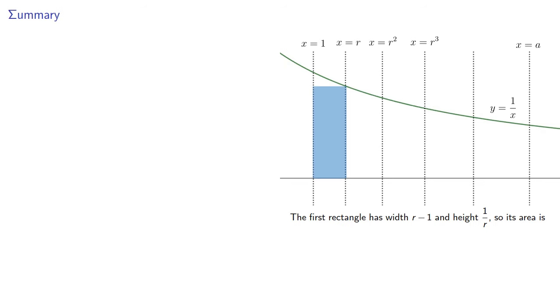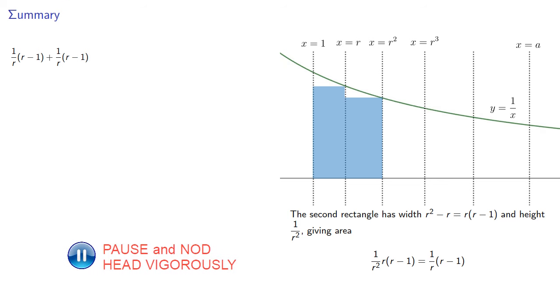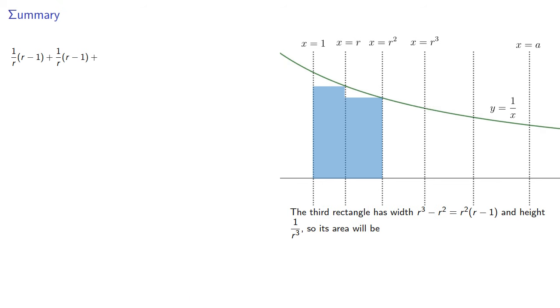The first rectangle has width r minus 1 and height 1 over r, so its area is r minus 1 over r. The second rectangle has width r squared minus r, which is r times r minus 1, and height 1 over r squared, giving area r minus 1 over r. The third rectangle has width r cubed minus r squared, which will factor as r squared r minus 1, and height 1 over r cubed, so its area will be r minus 1 over r. And there's n of these rectangles, so the total area of all the rectangles will be n times r minus 1 over r.